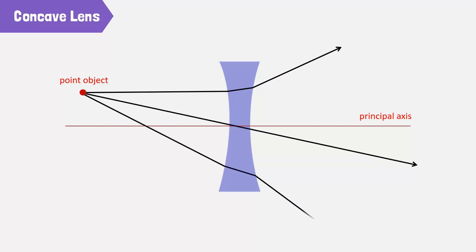These refracted rays diverge, which means they go away from each other. Hence, it's called a diverging lens.